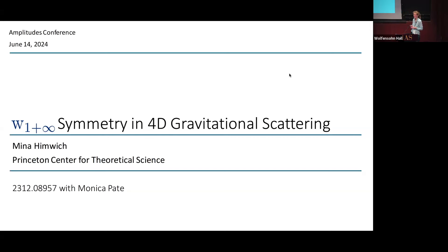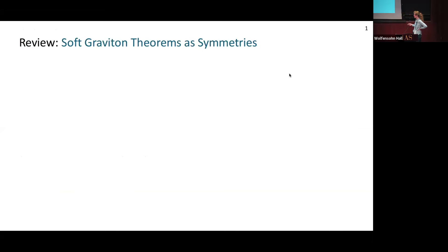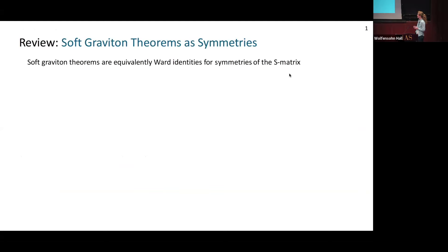I'm going to include some review that's probably familiar to people here, just for completeness, since it's the first time we've talked about celestial holography stuff at this conference. I'll first review how we can think about soft graviton theorems as symmetries — an important subject of study for the past 10-plus years. We can think about soft graviton theorems as equivalently Ward identities for symmetries of the S-matrix.